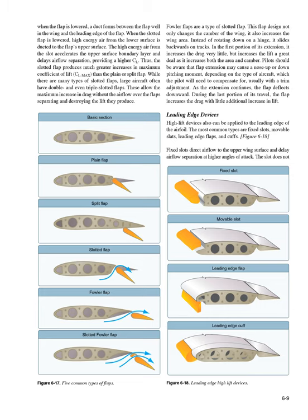Fowler flaps are a type of slotted flap that not only changes wing camber but also increases wing area by sliding backwards on tracks rather than rotating on a hinge. In the first portion of extension, Fowler flaps increase drag very little but increase lift greatly by increasing both area and camber. Pilots should be aware that flap extension may cause a nose-up or nose-down pitching moment depending on the aircraft type, which may require trim adjustment. During the last portion of travel, the flap increases drag with little additional lift.